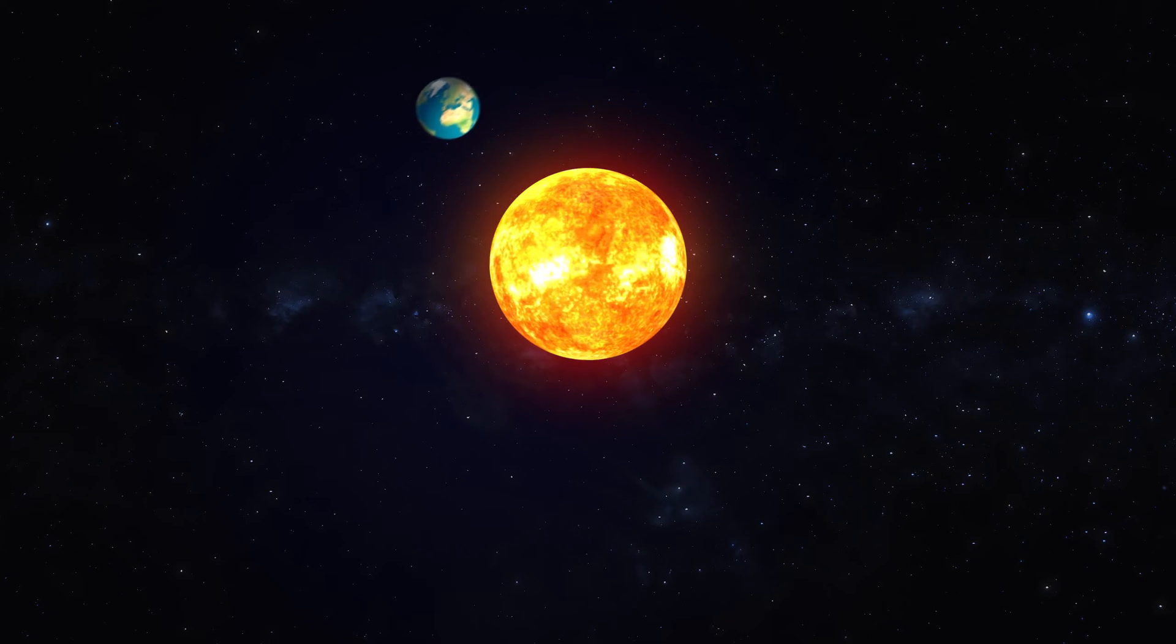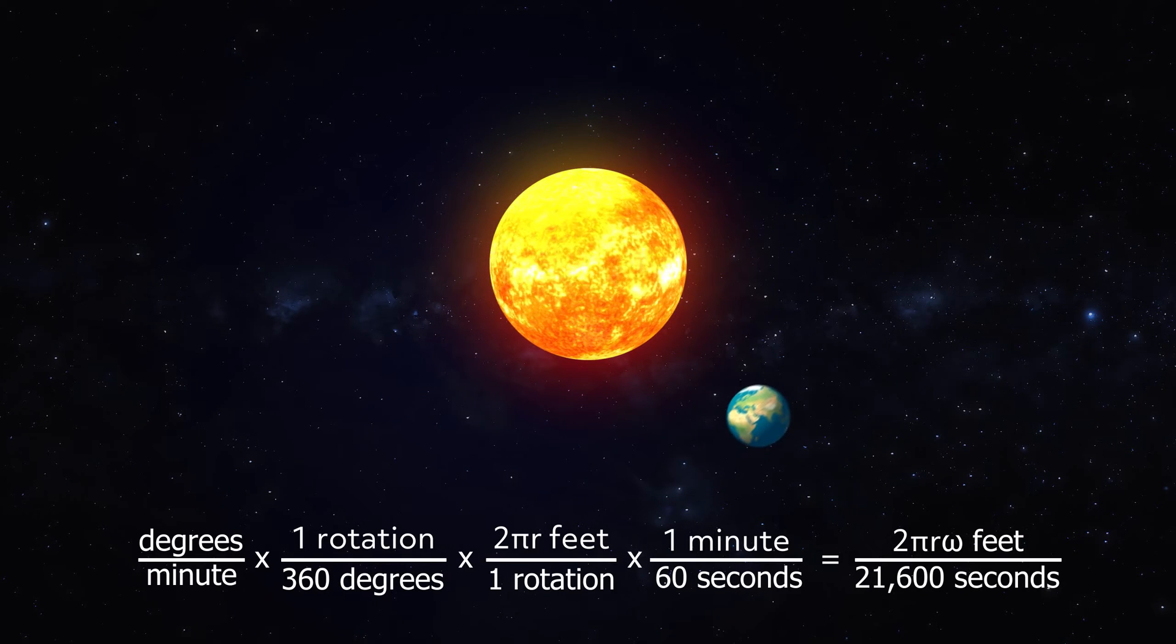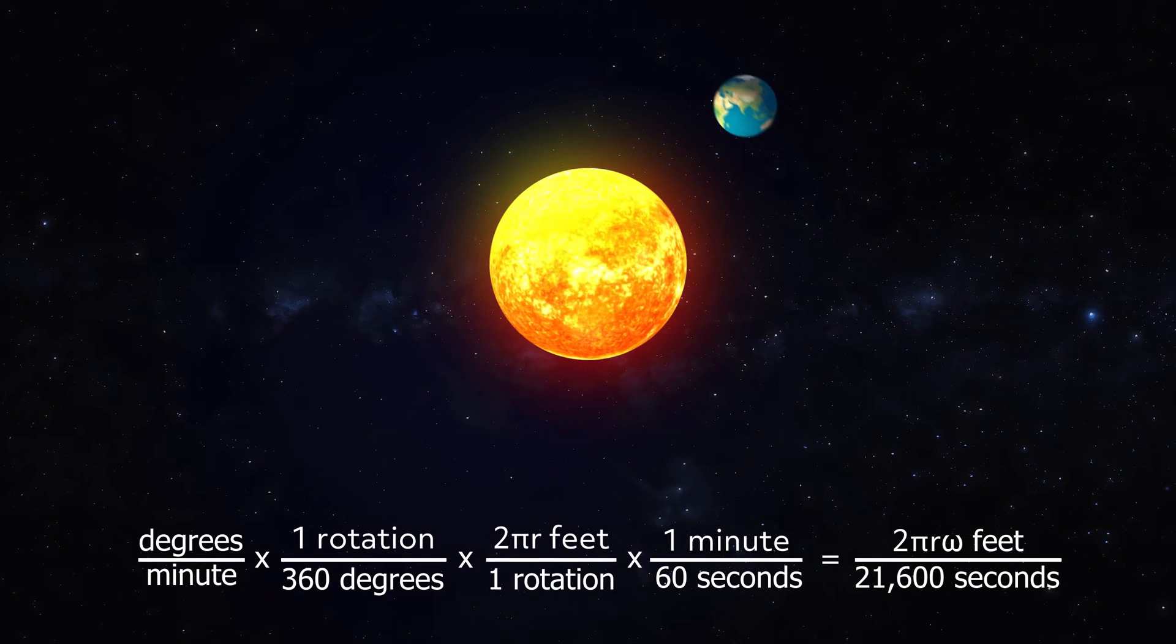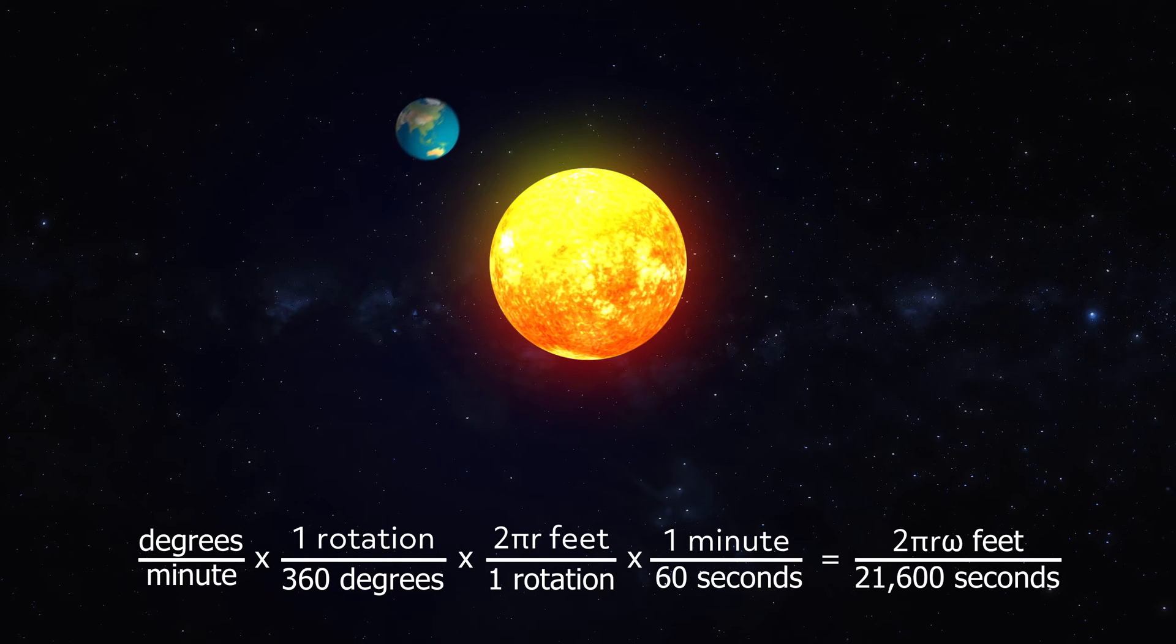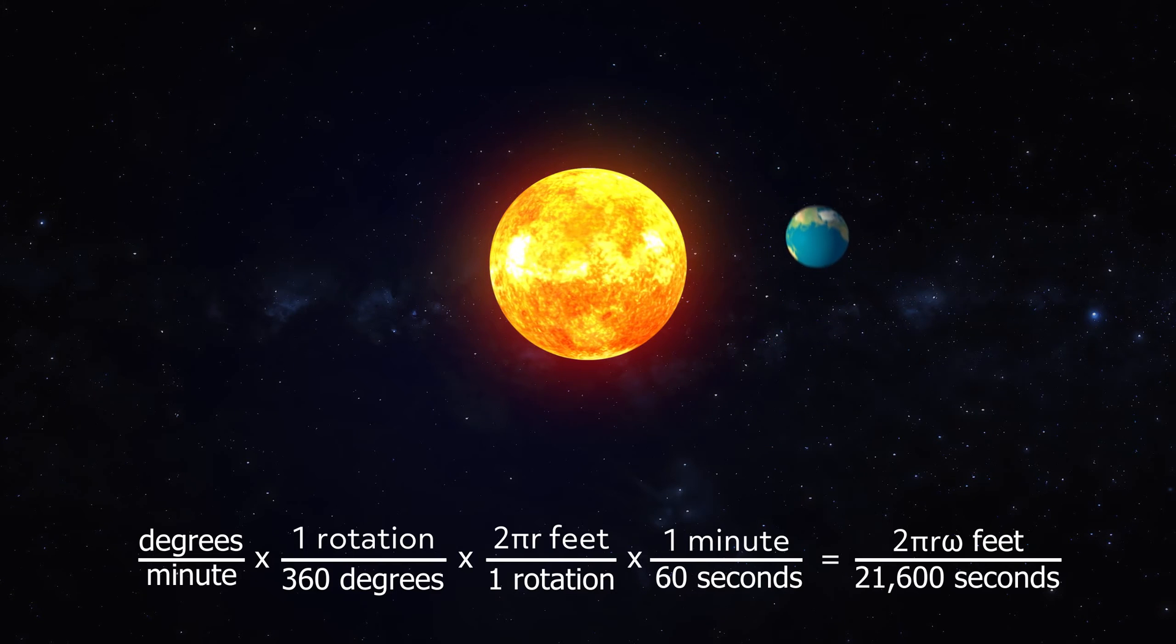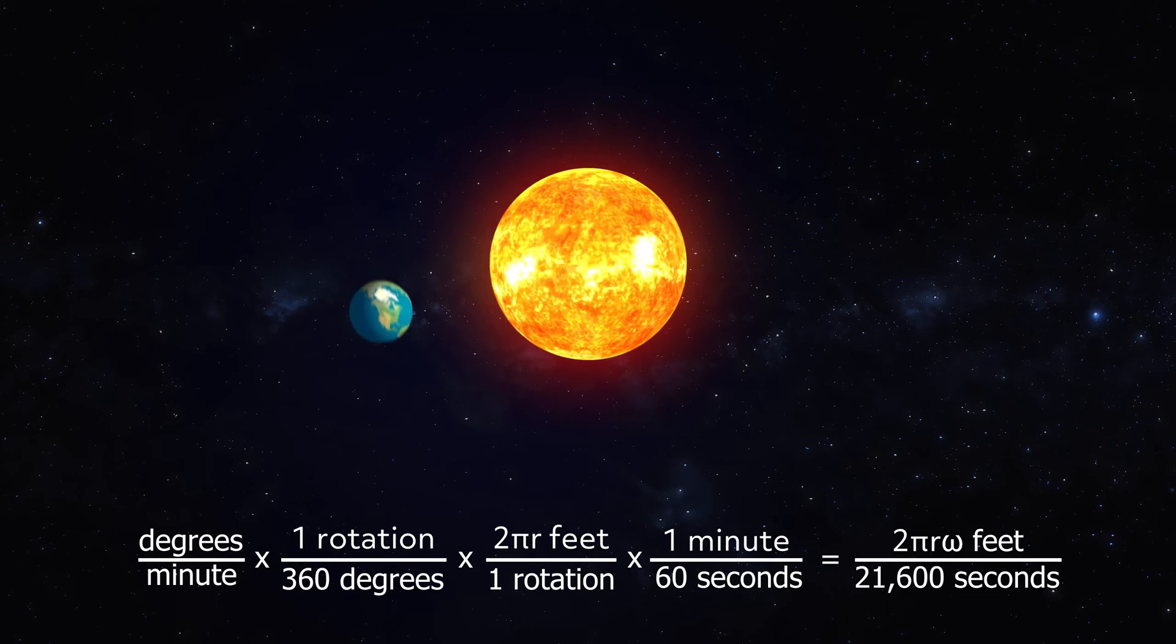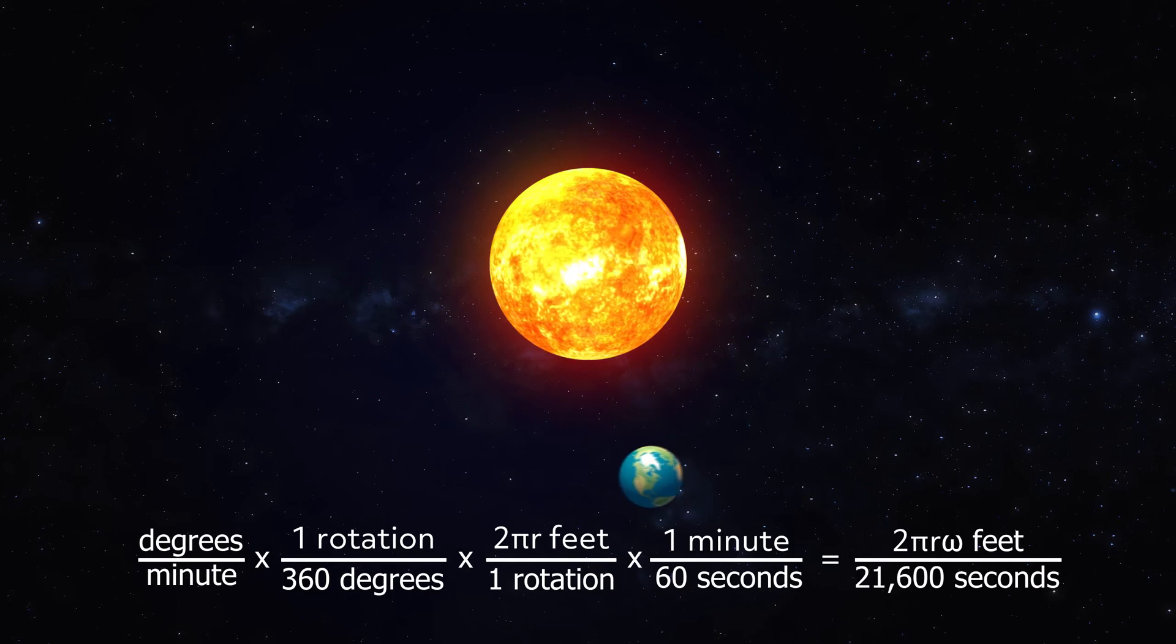Then, you can use the same steps to find the linear speed. Degrees per minute times one rotation per 360 degrees times 2 pi r feet per one rotation times one minute per 60 seconds equals 2 pi r omega over 21,600 feet per second.